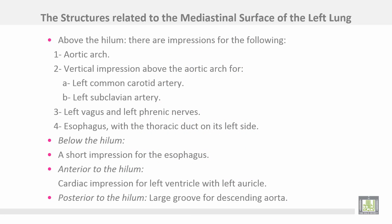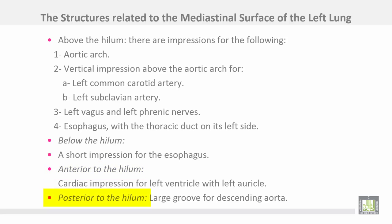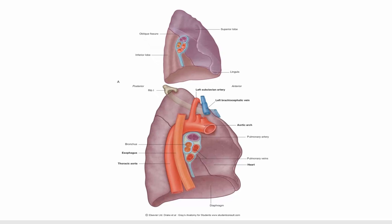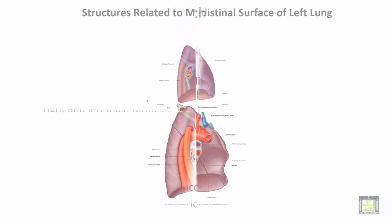The structures related to the mediastinal surface of the left lung: above the hilum, there are impressions for the aortic arch, a vertical impression above the aortic arch for the left common carotid artery, left subclavian artery, left vagus and left phrenic nerves, and the esophagus with the thoracic duct on its left side. Below the hilum, a short impression for the esophagus. Anterior to the hilum, a cardiac impression for the left ventricle with the left auricle. Posterior to the hilum, a large groove for the descending aorta. The esophagus is found on both mediastinal surfaces of both lungs. This figure shows the impressions, the descending aorta, and the esophagus.